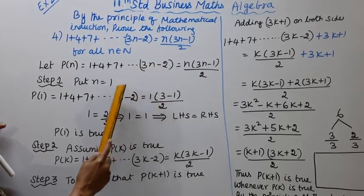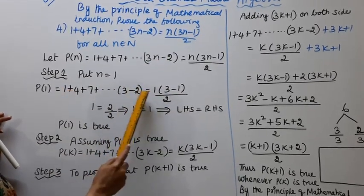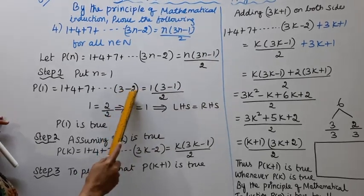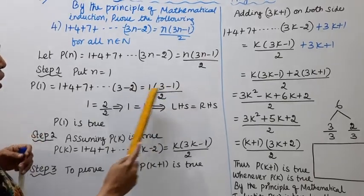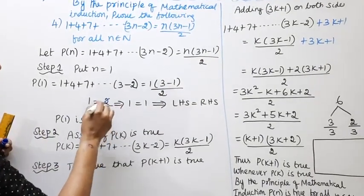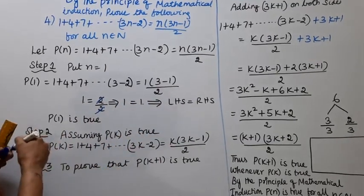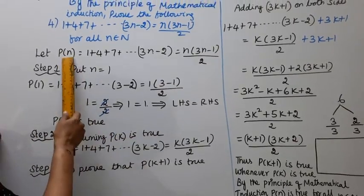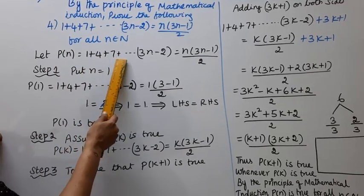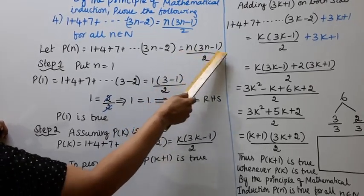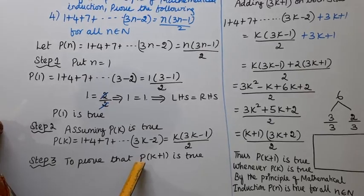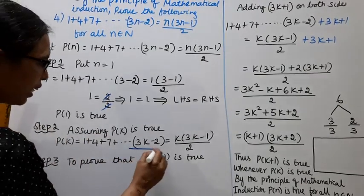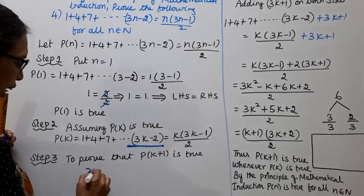Step 2: Assuming P of K is true. P of K equal to 1 plus 4 plus 7 etc. 3K minus 2 equal to K into 3K minus 1 by 2. To prove that P of K plus 1 is true.